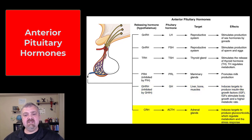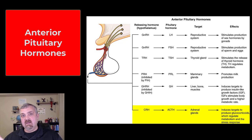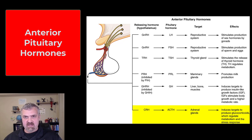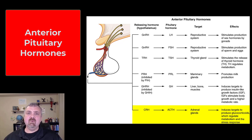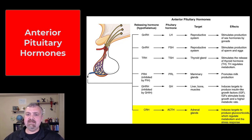The last anterior pituitary hormone is ACTH, or adrenocorticotropic hormone, which tells the adrenal cortex to release its hormones. That includes aldosterone — a mineralocorticoid that plays a role in reabsorbing sodium and water to keep blood volume and blood pressure up — and stress hormones like cortisol, which are glucocorticoids whose job is to raise blood glucose levels so you can fight or flee. Additionally, a small amount of androgens are produced there, relevant for women and prepubescent boys.